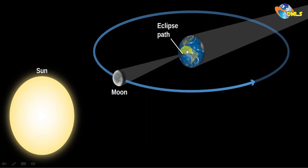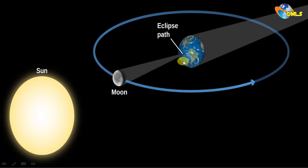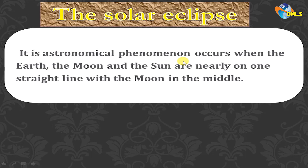When I see this picture, I observe that the moon is in the middle between the sun and the Earth. So you have two conditions: first, the sun, the moon, and the Earth are in a straight line; second, the moon is in the middle. If both of these occur, the phenomenon called a solar eclipse happens. The solar eclipse is a phenomenon that occurs when the Earth, the moon, and the sun are in a straight line with the moon in the middle.